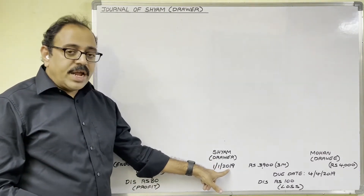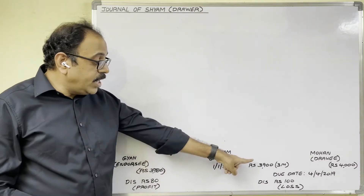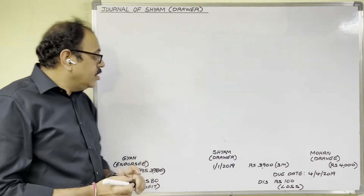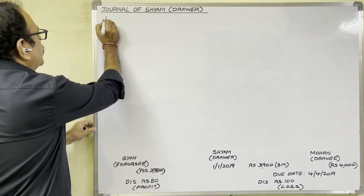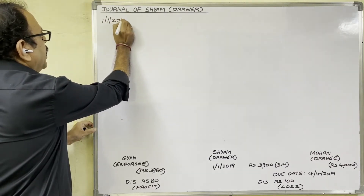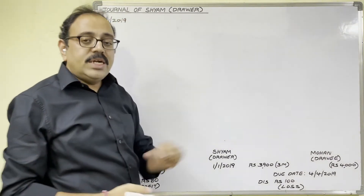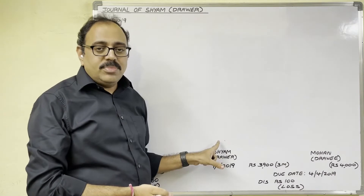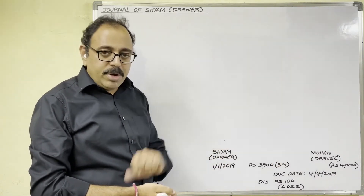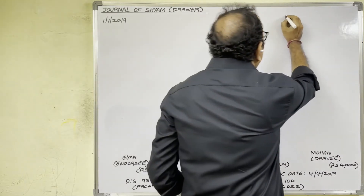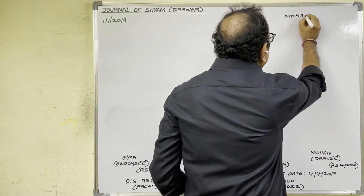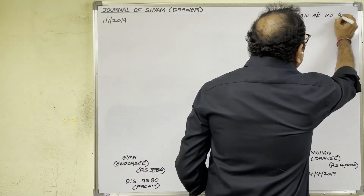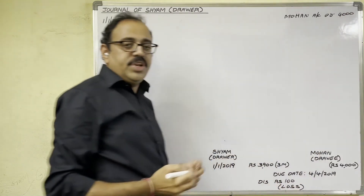As we are writing the journal of Sham, we have to analyze all transactions from Sham's point of view. First, on 1st January 2019, Sham received acceptance on a bill from Mohan. For this receiving of acceptance, we should write the 1st entry in Sham's books. Mohan is a debtor to Sham — debtor means asset, and asset shows a debit balance. Therefore, Mohan account was already debited in Sham's books with 4,000 rupees.